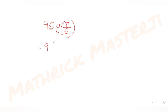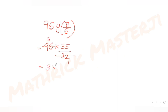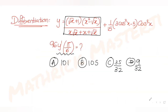The question asks us to multiply y'(π/6) by 96. So 96 × (35/32) = 3 × 35 = 105. The answer for the question is 105, which matches option B. So option B is the correct answer.